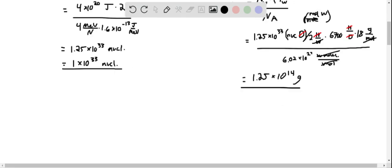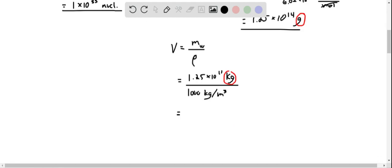Because I know my volume is related to mass and density by taking the mass of water divided by the density of water, I can determine this to be 1.25 times 10 to the 11 kilograms, converting from grams to kilograms by dividing by 1,000 to match the units of my density, 1,000 kilograms per cubic meter. My units for kilograms cancel out, and I am left with a final answer of 1.25 times 10 to the 8 cubic meters.